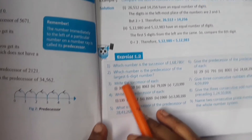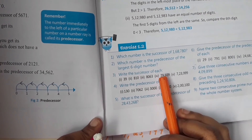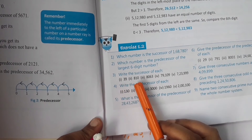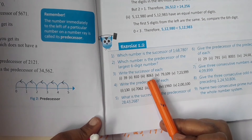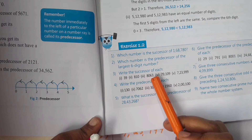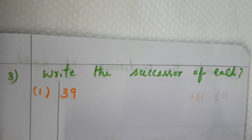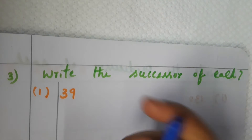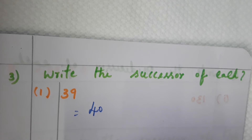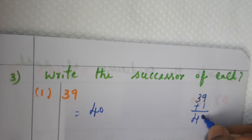The second question is over. Now, third question: write the successor of each. Successor means after number — the next number we have to write. Successor means we have to add one, plus one. Predecessor means we have to minus one. Successor of thirty-nine is forty — thirty-nine plus one is forty.